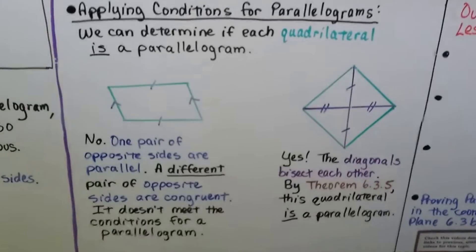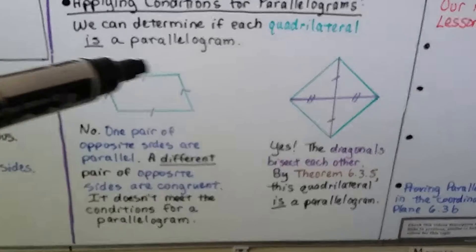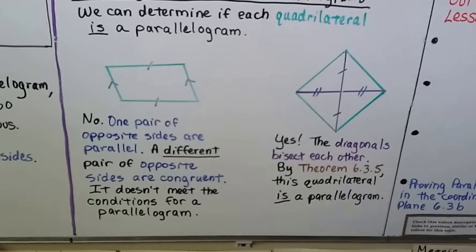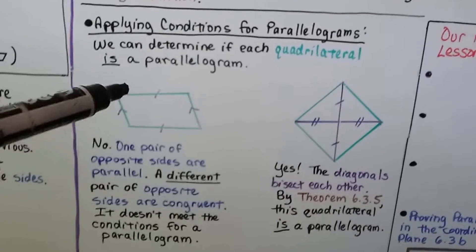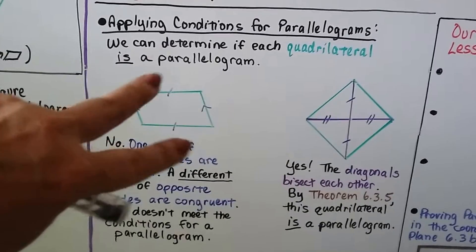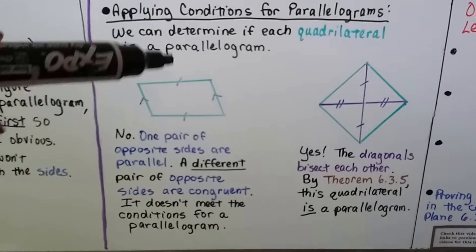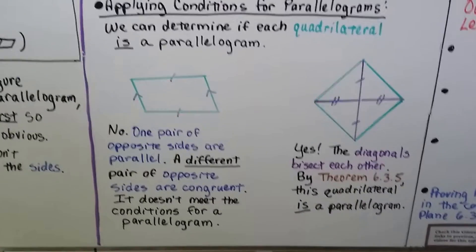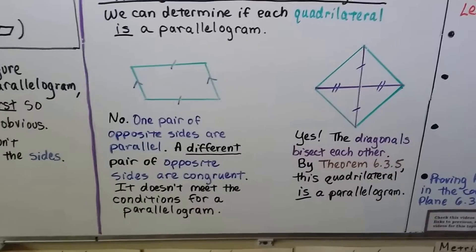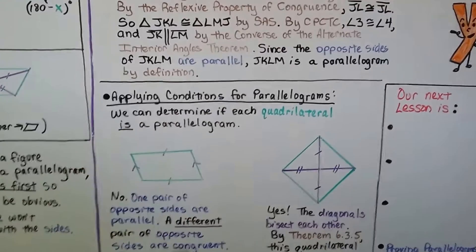Now applying conditions for parallelograms to determine if each quadrilateral is a parallelogram. The first example shows one pair of opposite sides with equal length marks and one pair marked parallel — but looking carefully, the other pair of sides are not both parallel and the lengths differ slightly. One pair of opposite sides are parallel, but a different pair of opposite sides are congruent, so it does not meet the conditions for a parallelogram. Theorem one requires the same pair to be both parallel and congruent.